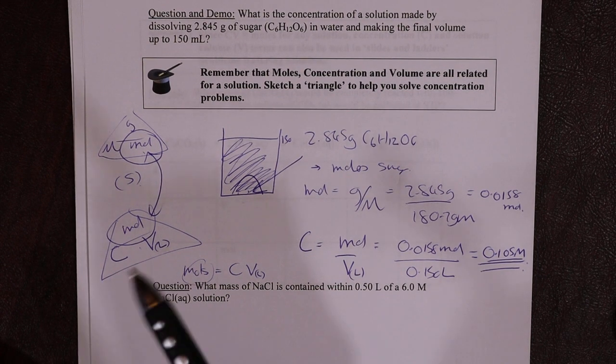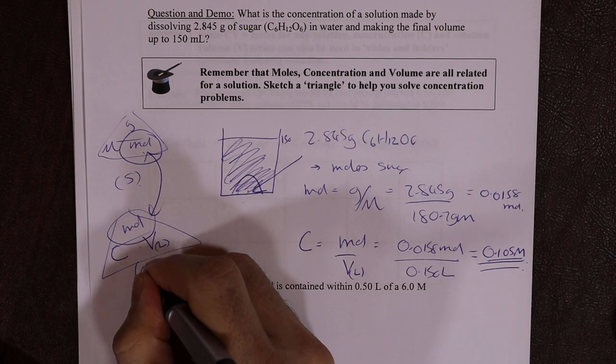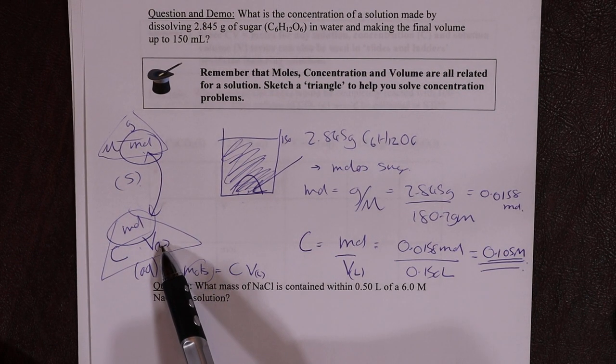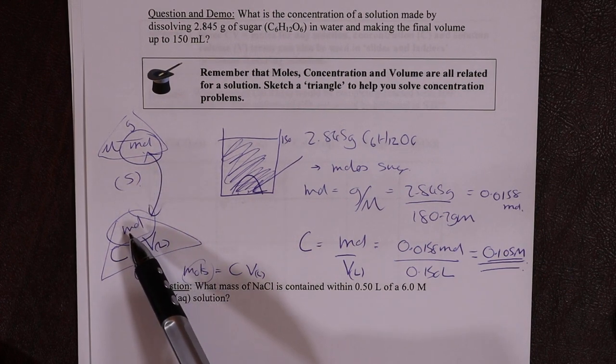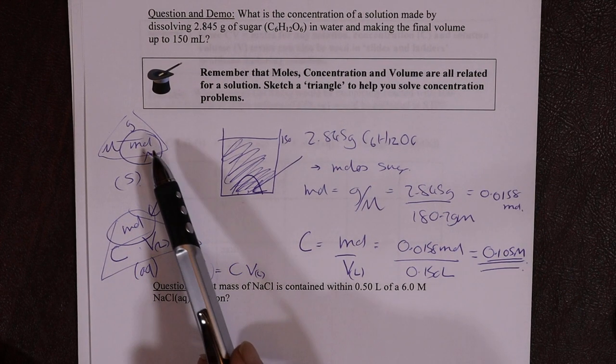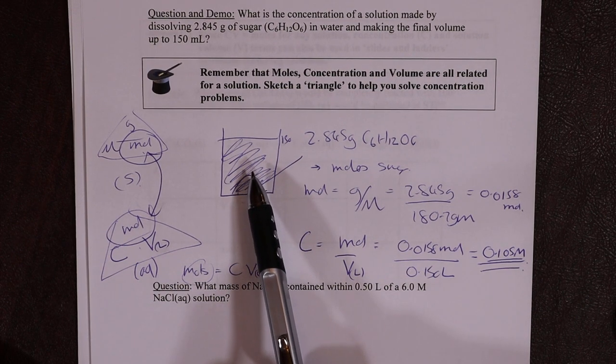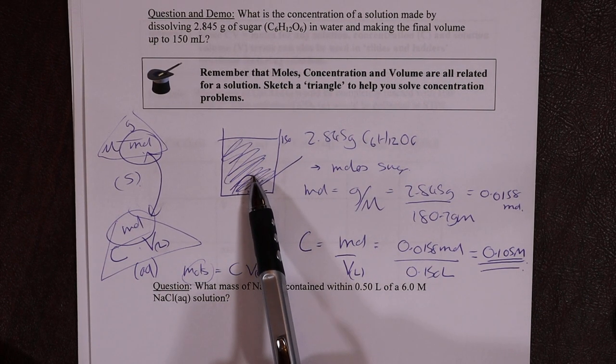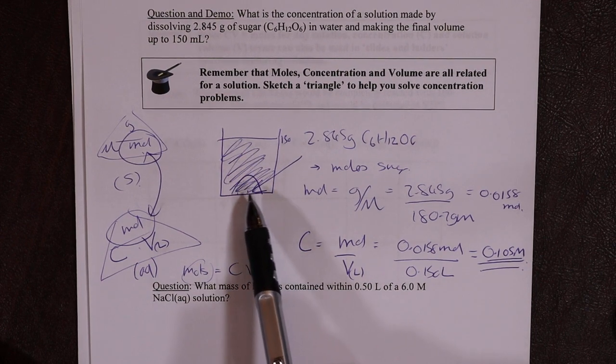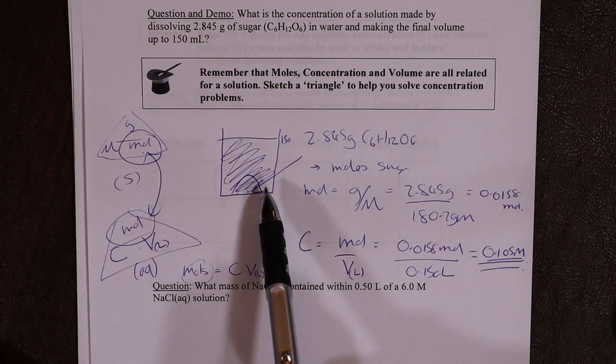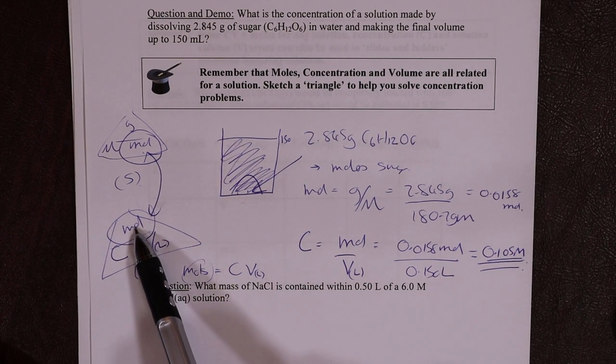When we have a solution, which is aqueous, we have our concentration, moles, and volume triangle. What relates the two is a consistent number of moles. So when we dissolve a pile of sugar into some water, I don't change the number of sugar molecules when it dissolves. They're just swimming around in there, and now they're free to move around and not just in a pile. It's the same number, same number of moles. So that's why the moles is consistent between the two.